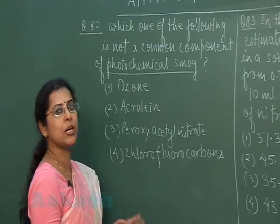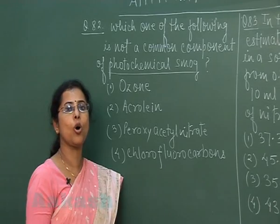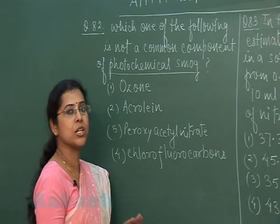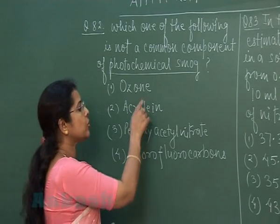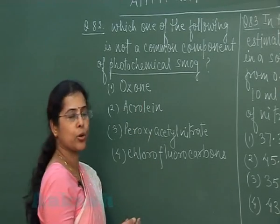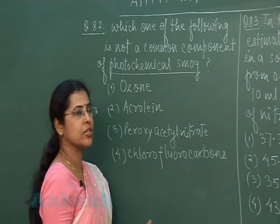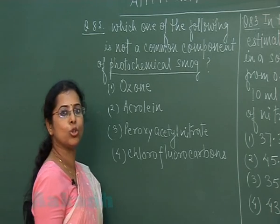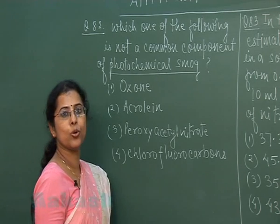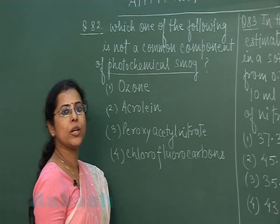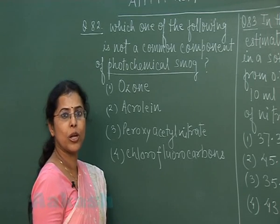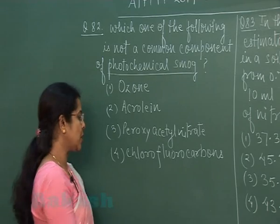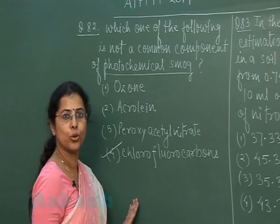Smog may be reducing smog or oxidizing smog. Photochemical smog is known as oxidizing smog, and all three components — ozone, acrolein, and peroxyacetyl nitrates — are present in photochemical smog. But the fourth option, chlorofluorocarbon, is responsible for global warming and is not a component of photochemical smog. So the correct option is the fourth one.